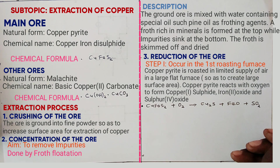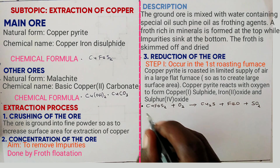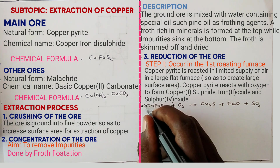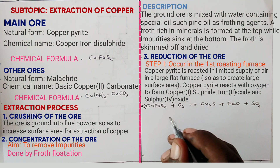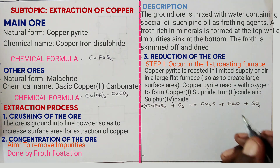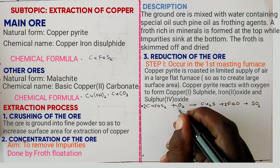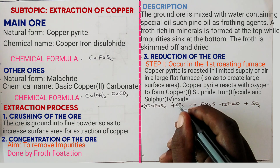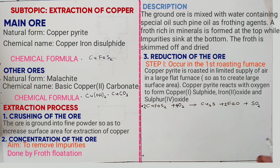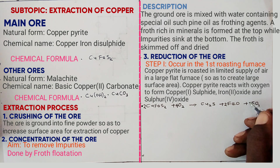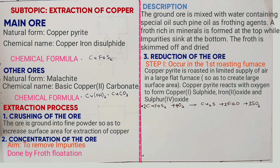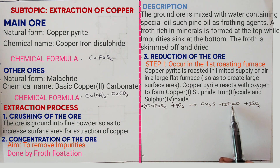To balance the equation, coefficients are placed: 2CuFeS2 + 3O2 → Cu2S + 2FeO + 3SO2. The copper one sulfide and iron two oxide go to the next stage, while sulfur dioxide is emitted outside.